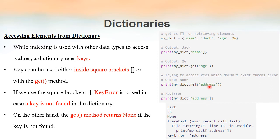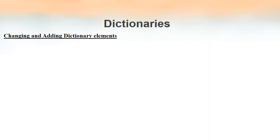As shown in the output, we have None — because my_dict.get('address') finds that this key is not inside the dictionary, so the get method returns None. On the other hand, when using square brackets for the missing key 'address', we get a KeyError because that key is not there inside the dictionary.